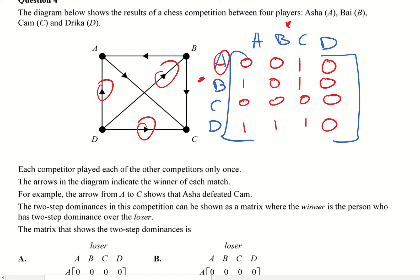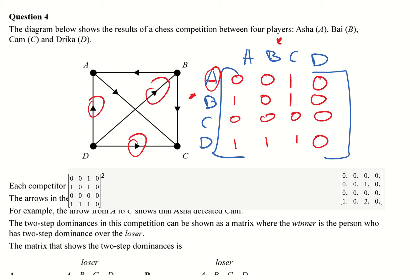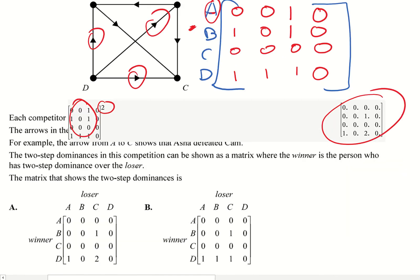And so what you do now is you take that one-step dominance and I square it. And what you get is this is your answer. So that is your two-step dominance. So now you go back and compare and see which one it matches. And in this case, you'll see that it matches A. All right, so let's go to the next question.